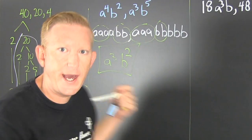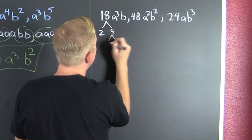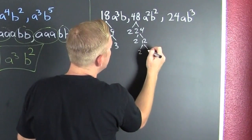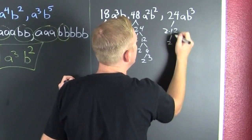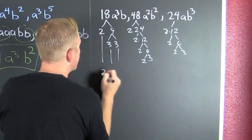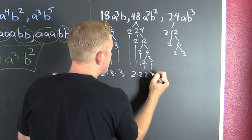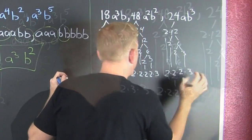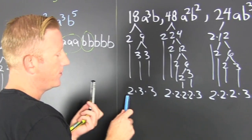Let's use that on this next example with numbers. Breaking down 18: that's 2 and 9, that's 3 and 3 — so two times three times three. Breaking down 48: that's 2 and 24, 2 and 12, 2 and 6, 2 and 3 — two times two times two times two times three. Breaking down 24: that's 2 and 12, 2 and 6, 2 and 3 — two times two times two times three.